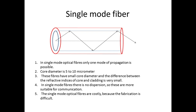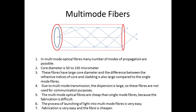Single mode optical fibers are costly because fabrication is difficult. In contrast, in multimode fibers, many modes of propagation are possible. Since many modes are possible, the core diameter is larger — around 50 to 150 micrometers. The difference between the refractive indices of core and cladding is also large. Launching light into multimode fiber is easy, making fabrication easier and these fibers cheaper than single mode fibers.